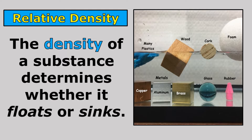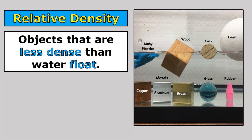The density of a substance determines whether it floats or sinks. And when we talk about something's relative density, we're talking about whether it's more or less dense than something else — specifically, whether things are more or less dense than water. Objects that are less dense than water float. So wood, cork, foam, and many plastics are less dense than water, and you can see here that all of these substances are floating.